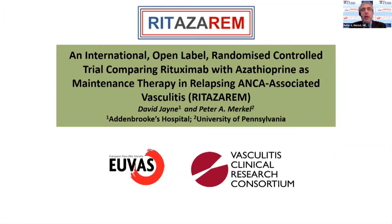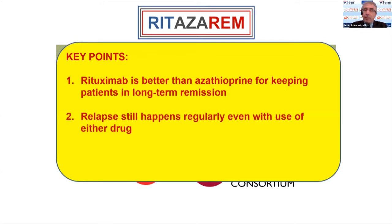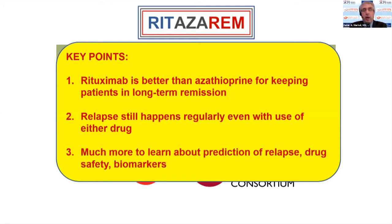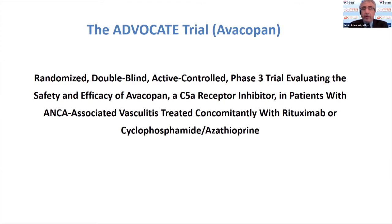The second part of PEXIVAS showed that using almost half as much prednisone was just as good and safer than usual doses — we think this has changed the standard of care. The RITAZAREM study, which I'm running with my colleague Dr. Jayne in Europe, showed that rituximab was better than azathioprine for keeping patients in long-term remission, but relapse still happens regularly even with either drug. We have an enormous amount of data and specimens to analyze further.